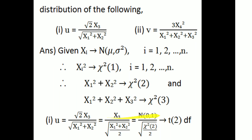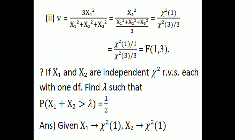Since x₃ follows N(0,1) and x₁² + x₂² follows chi-square(2), the ratio x₃ / √[(x₁² + x₂²)/2] follows a t-distribution with 2 degrees of freedom. For the second part, 3x₄² / (x₁² + x₂² + x₃²): x₄² is chi-square(1), and x₁² + x₂² + x₃² is chi-square(3), so the ratio chi-square(1)/1 divided by chi-square(3)/3 follows an F-distribution with degrees of freedom 1 and 3.